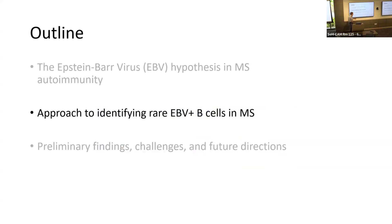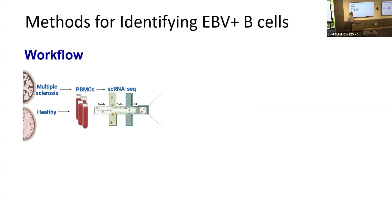A big gap in the field has been actually identifying these rare EBV-positive B cells. Much of the literature on EBV biology comes from indirect methods or from the oncology literature, but it has been really hard to identify EBV-positive B cells in patients with autoimmune conditions. This was the project I joined, spearheaded by postdoc Shadi Unis, using a single-cell sequencing approach to try to identify these EBV-positive B cells.